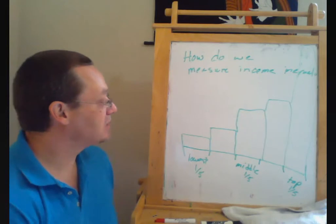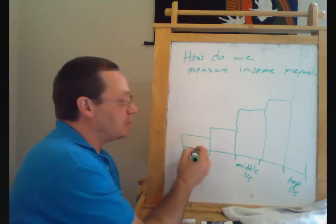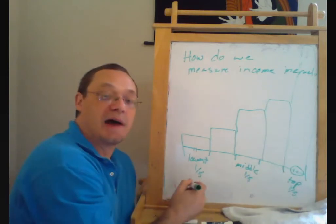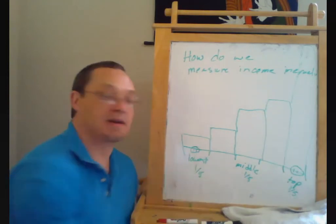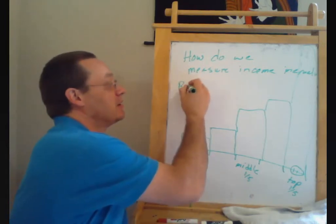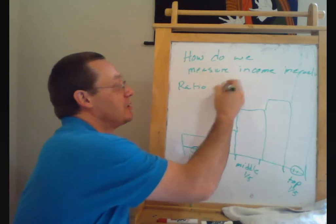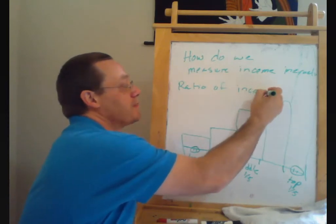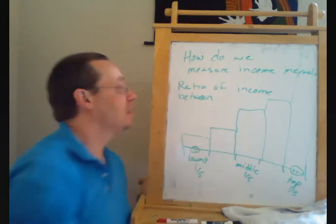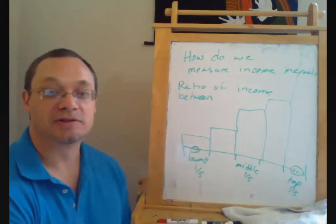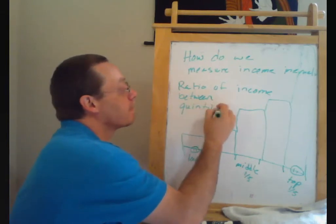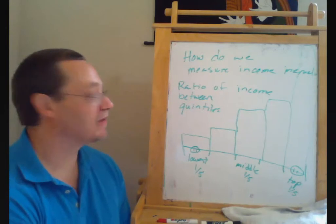And then sometimes people go, all right, let's look at the ratio of incomes in the highest one-fifth relative to incomes in the lowest one-fifth. So this is looking at the ratio of income between quintiles, so they're fifths.